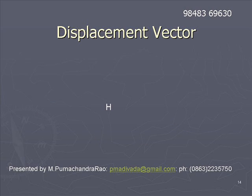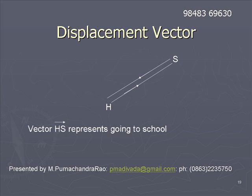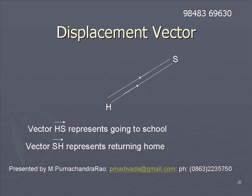Suppose H is the home of a student and S is the position of the school. The straight line distance from H to S is the magnitude of the displacement. If the boy goes from H to S, his displacement is HS. If the boy returns home from school, then his displacement is SH. The displacement SH indicates returning home and HS indicates going to school.